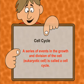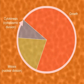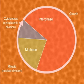The cell cycle is divided into two basic phases: interphase and M phase. During interphase, the cell prepares itself for the division.